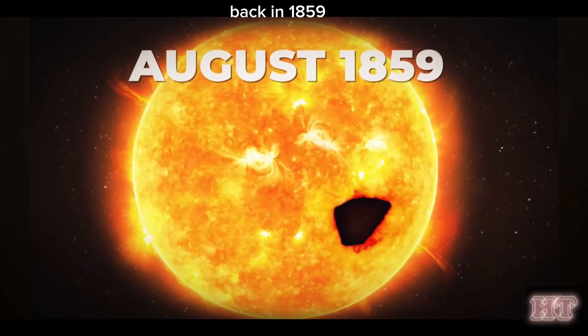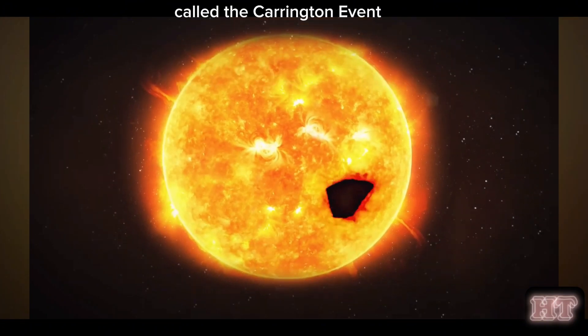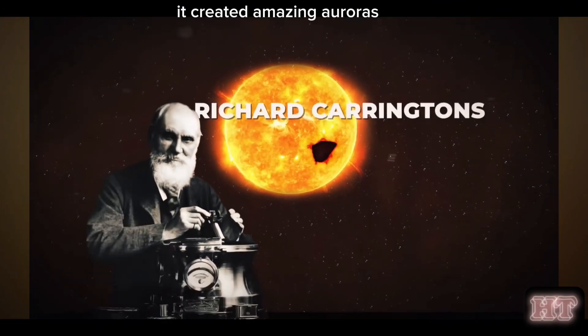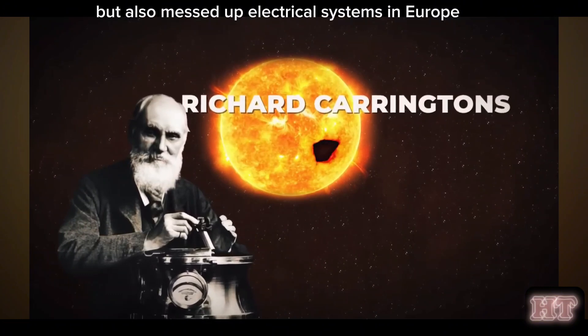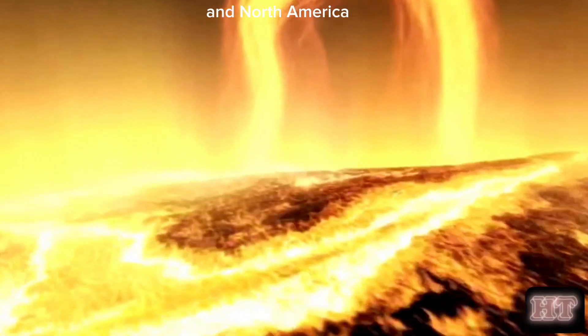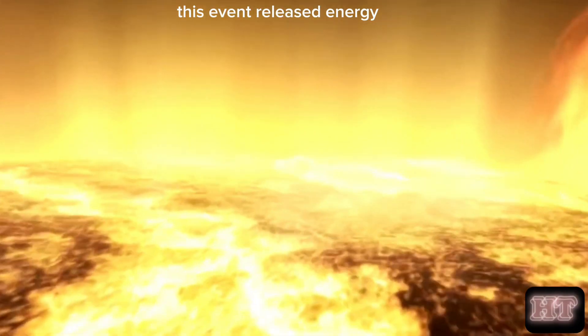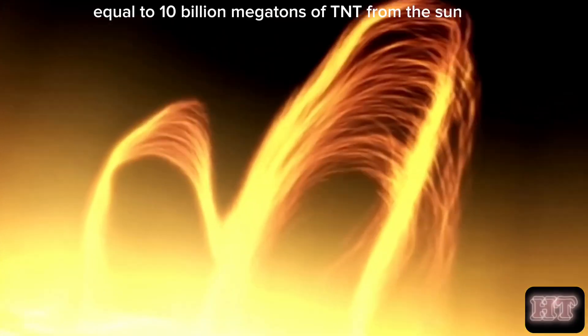Back in 1859, there was a massive solar storm called the Carrington Event. It created amazing auroras, but also messed up electrical systems in Europe and North America. This event released energy equal to 10 billion megatons of TNT from the sun.